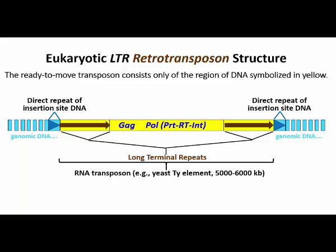GAG encodes group specific antigen, a structural protein that forms a virus-like particle that will contain reverse transcribed transposon DNA. RT encodes reverse transcriptase that will make reverse transcribed copies of transcribed transposons. PRT encodes a protease that will break down the virus-like particle as the retroposon enters the nucleus. INT encodes integrase, required for integration of the transposon into genomic DNA at a site of insertion.